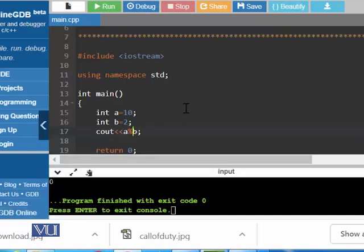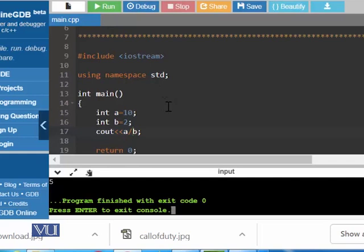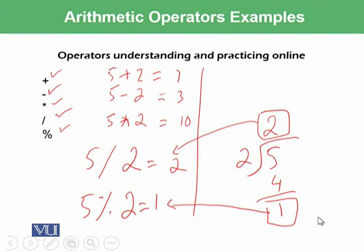And if you use the division operator over here, you will get 5 because 5 2s are 10. So this is very simple to implement these things in C++ language. We have discussed and practiced all of these operators on this board as well as on the online compiler.